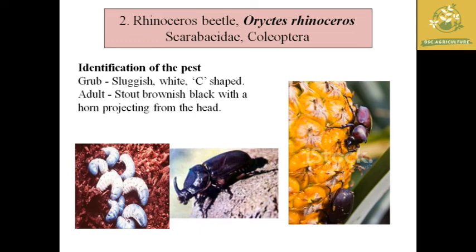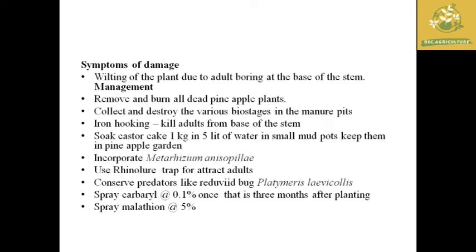The next pest is rhinoceros beetle, with the scientific name Oryctes rhinoceros, belonging to family Scarabaeidae and order Coleoptera. The damaging stage is the grub, which is sluggish, C-shaped, and feeds on the roots of pineapple plants. The adult is a stout black beetle with a horn-like projection on its head. The adult bores at the base of the stem, causing wilting of the whole plant.